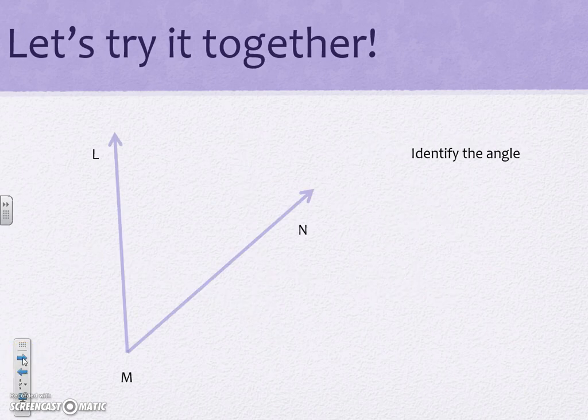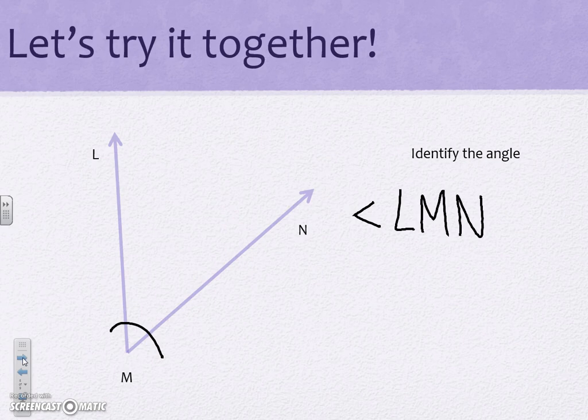Let's try another one. Again our common point where our two lines intersect is M and then we write it in alphabetical order. We have our angle LMN. Again this angle is less than 90 degrees so it is an acute angle.